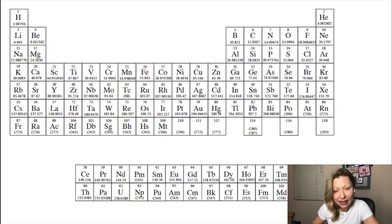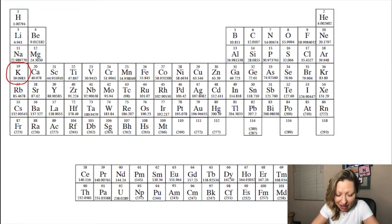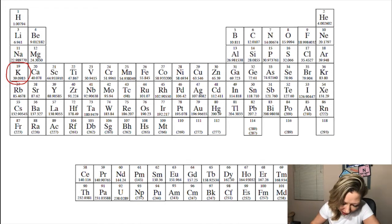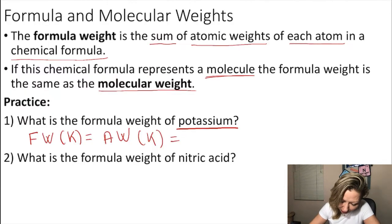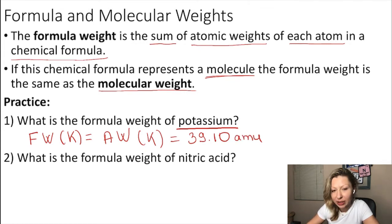Let's find potassium. It's element number 19. Where is the atomic weight? It's right below the symbol. So this is 39.0983. We can round to two significant digits after the decimal place, which gives us 39.10. So the formula weight, or the atomic weight of potassium, is 39.10 AMU.